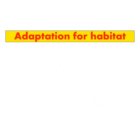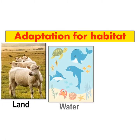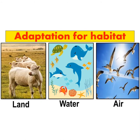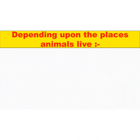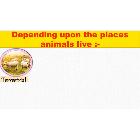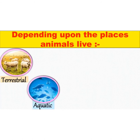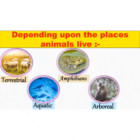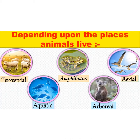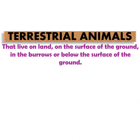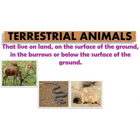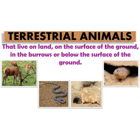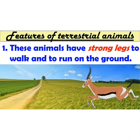Dear children, as you know, some animals live on land, some live in water, and some spend their time in air. These animals have different features which help them live comfortably in their environment. Depending upon the place they live, animals can be classified into terrestrial animals, aquatic animals, amphibians, arboreal animals, and aerial animals. First, we will see terrestrial animals. Terrestrial animals live on land, on the surface of the ground, in burrows, or below the surface of the ground. These animals have features suitable for life on land.